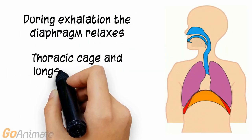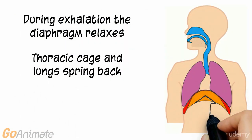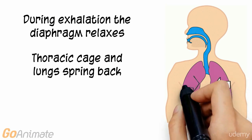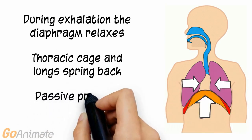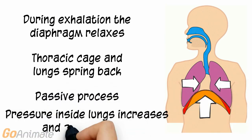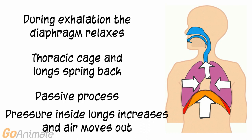During exhalation, the diaphragm and thoracic cage spring back to their original position. This is considered a passive process since no additional energy is used. The pressure inside of the lungs increases and air moves out.